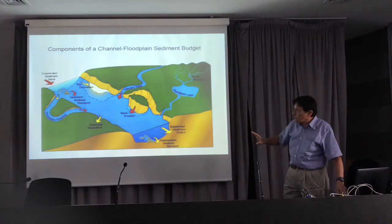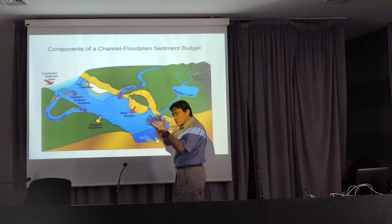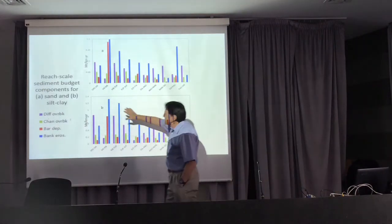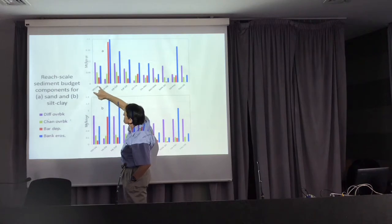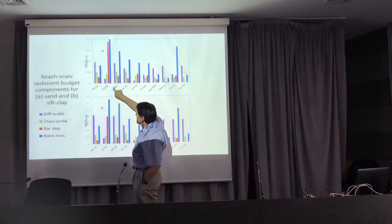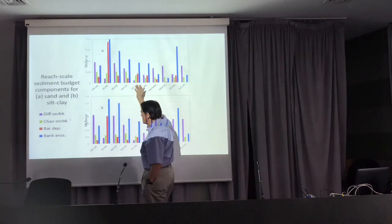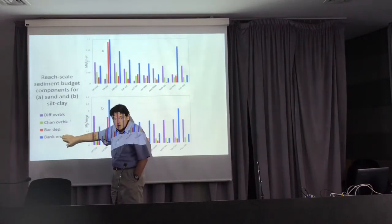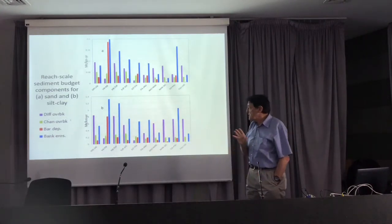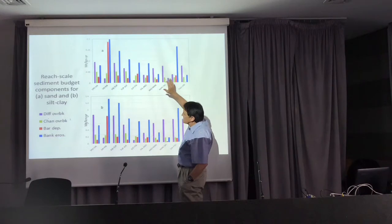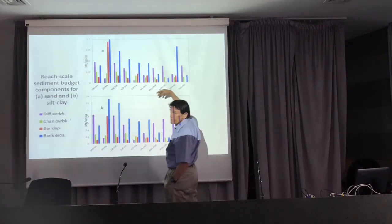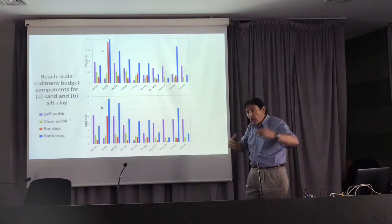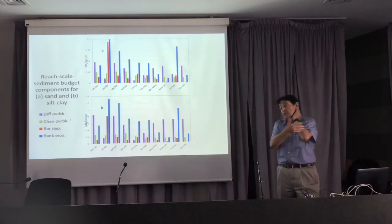We were able to show that this sediment budget could be defined for every reach. These are reach-scale budgets between each of our stations, each representing about 200 kilometres. These are the different exchange processes: diffuse overbank, channelized overbank, bar deposition, and bank erosion. For both sand and silt and clay, there's a spatial pattern down the river in the magnitude of these exchanges, and that spatial pattern is related to the widening and narrowing of the floodplain that appears to reflect the underlying geological structure.